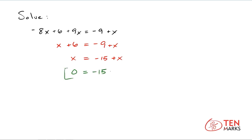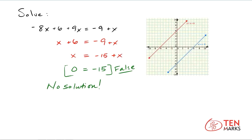And you know that this right here is a false statement — it's not true. 0 does not equal negative 15. And what this means is that there will be no solution to this equation. Now let's see what this looks like graphically. Here on the graph you have two parallel lines, and you know that parallel lines never intersect. So again the graph verifies that there is no solution.